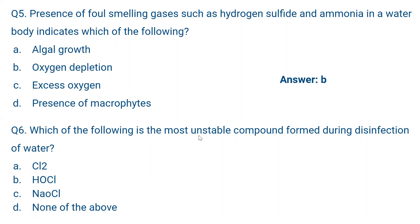Question number six: Which of the following is the most unstable compound formed during disinfection of water? Options include chlorine, hypochlorous acid, sodium chloride, and sodium oxychloride. The correct answer is B — hypochlorous acid, which is an intermediate compound formed from the reaction of chlorine with water and is the most unstable compound formed during disinfection.